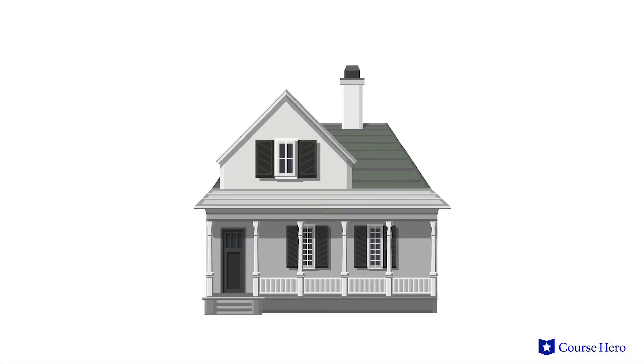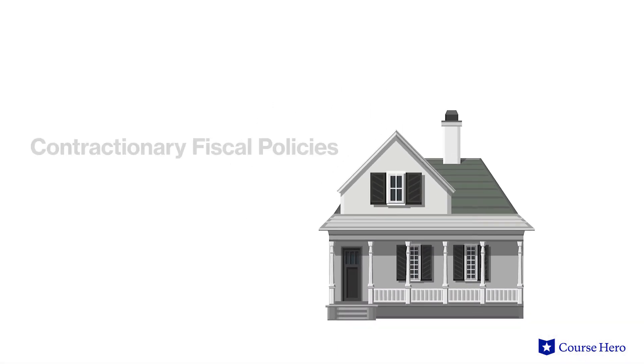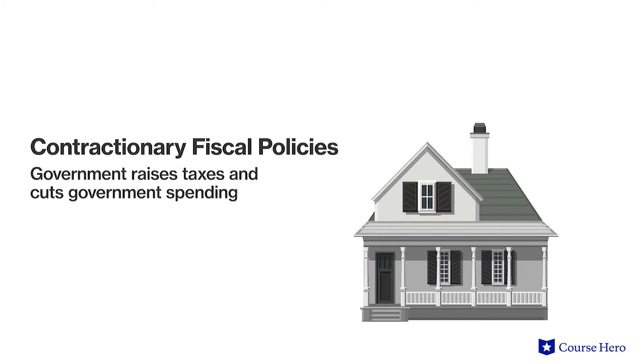As a result, when governments view growth or inflation as too rapid, they embark on contractionary fiscal policies. These generally involve measures contradictory to expansionary policies. Governments raise taxes and cut government spending. Cuts in government spending can take several forms with different impacts. Consumer demand might be tempered by cuts to social welfare spending or unemployment insurance, for example.